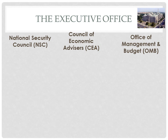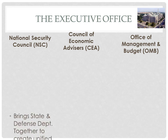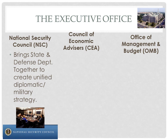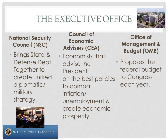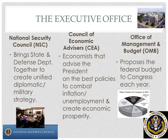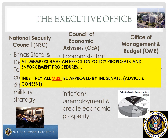When it comes to planning policy proposals, that's a job better left to the executive office of the president. The executive office has three separate strands: the National Security Council (NSC), which brings the state and defense departments together to ensure consistency between foreign policy and military strategy; the Council of Economic Advisors, professional economists who advise the president on the best policies to combat inflation and unemployment while creating prosperity; and the OMB, or Office of Management and Budget, which helps the president put together the budget proposed to Congress each year. Every member of each strand of the executive office has direct influence on policy and must be approved by the Senate through the advice and consent power.